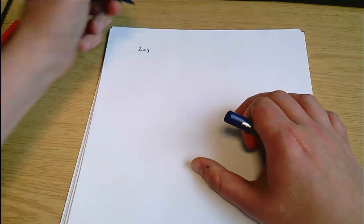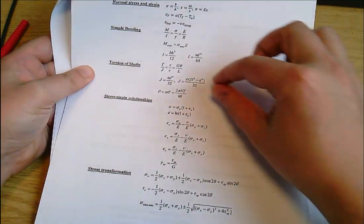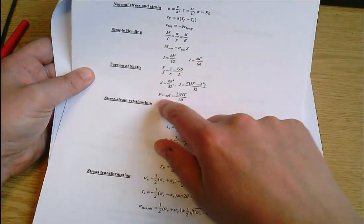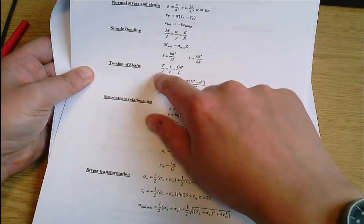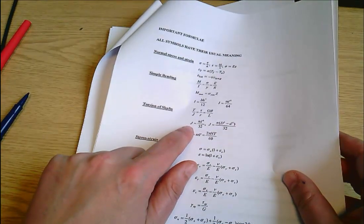Looking at the data sheet, the information we want is all in torsion of shafts. In particular, I want the relationship between power and torque, the torsion equation, and also that for a solid shaft J equals pi D to the 4 divided by 32. So three pieces of relevant information there.